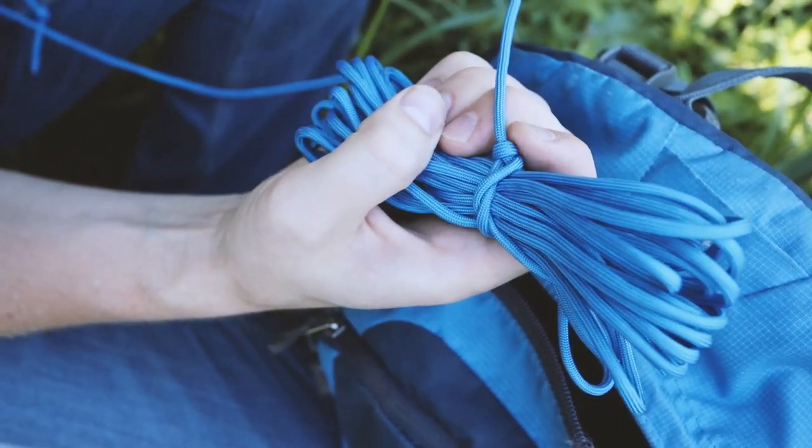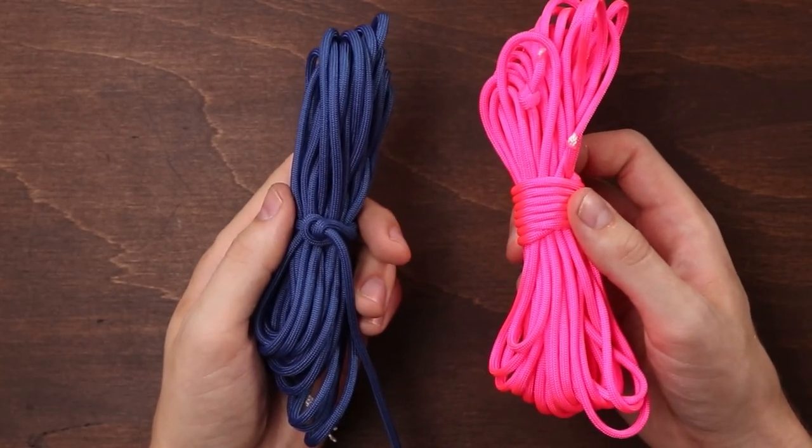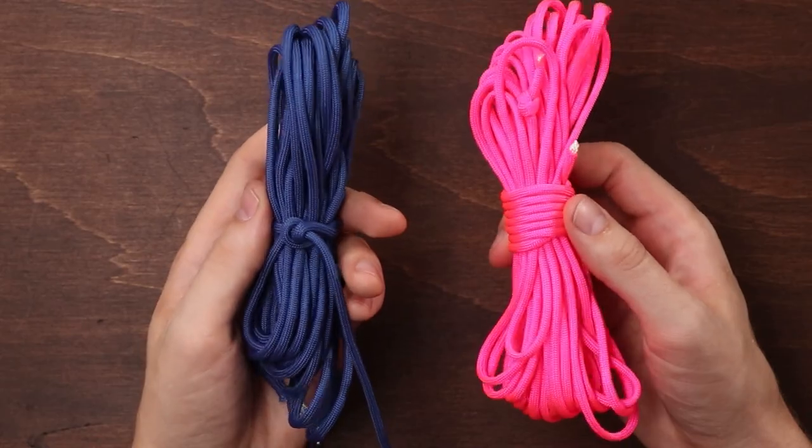Hey guys, welcome back to Paracord Planet. I came across a modification of our quick hank method that we've used on this channel plenty. So if you're familiar with that, this is a potentially faster way to tie it. It doesn't look quite as pretty, but it has some advantages of its own.